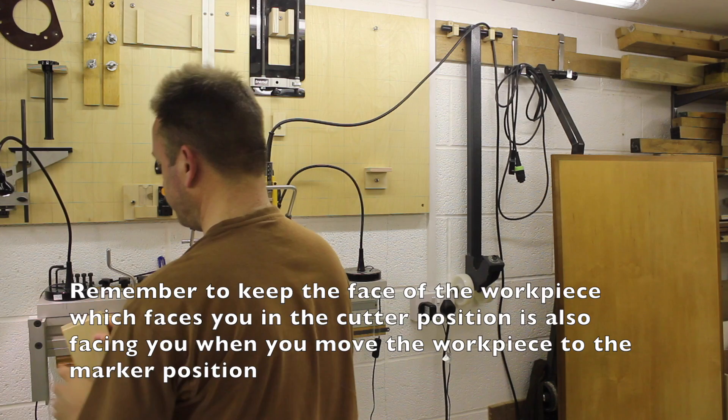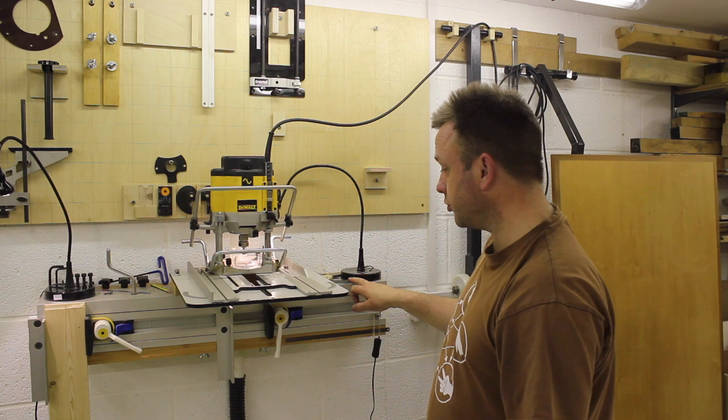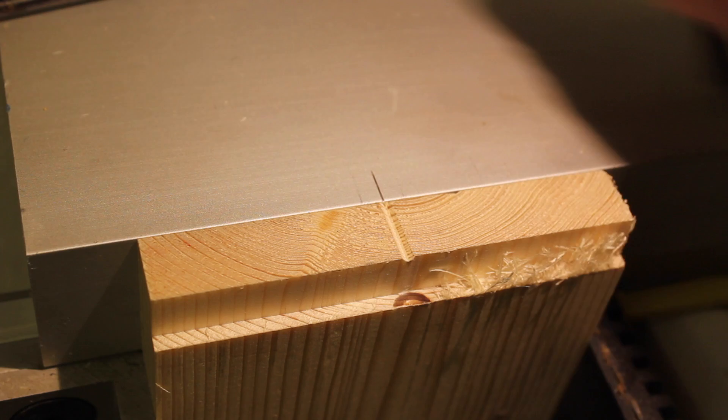So that little V groove in the top of my piece of wood now can go in the marker position over here. And we can then scribe it to the top of the Woodrat body, just using the square and scribe. So that's all there is to it.